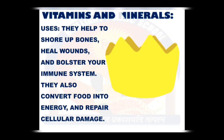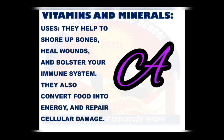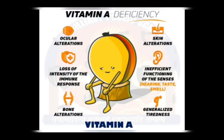Vitamin A is important for many bodily functions including proper vision, strong immune system, and good skin health. It plays a very important role in skin repair and helps fight inflammation. Deficiency can lead to stunted growth in children, inflammatory skin conditions, rashes, dry eyes, and blindness. The first sign of deficiency is often the inability to produce tears, followed by night blindness, and after that many more diseases can occur.